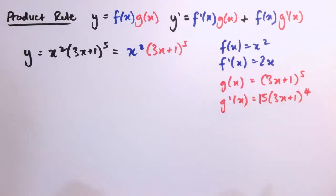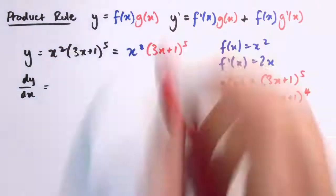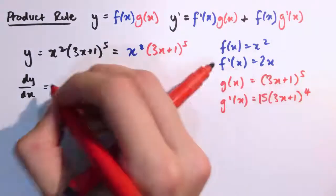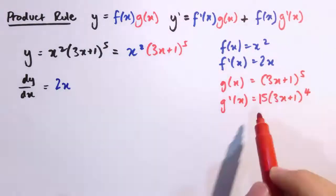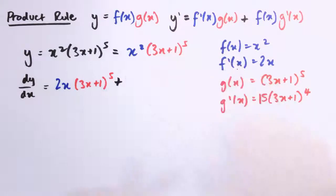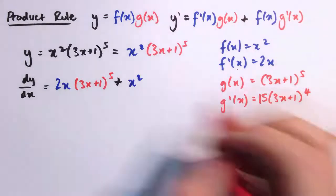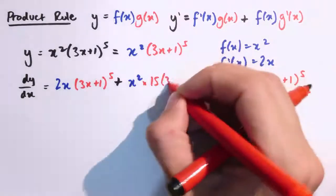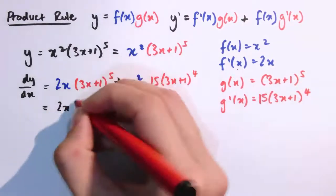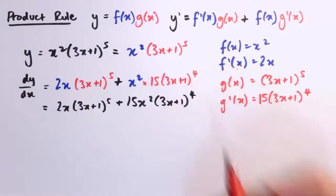Applying the product rule, dy/dx equals f dashed times g of x. So first I differentiate x squared and leave g alone — giving 2x times (3x plus 1) to the 5 — and for the second part I leave f alone as x squared and multiply by the derivative of g, which is 15 times (3x plus 1) to the 4. So we get: 2x times (3x plus 1) to the 5 plus 15x squared times (3x plus 1) to the 4.